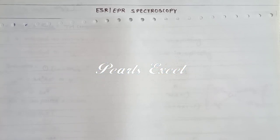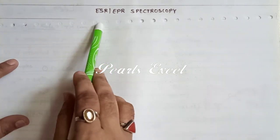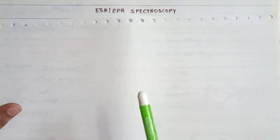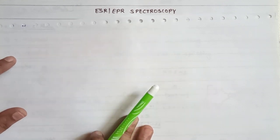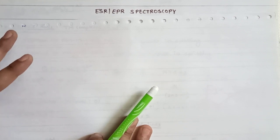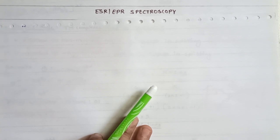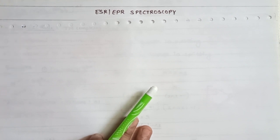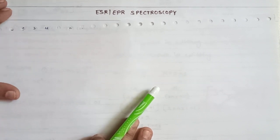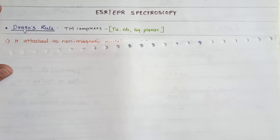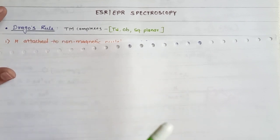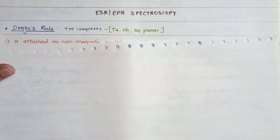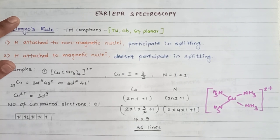Hi, hello friends, welcome to Pulse Excel. Today in this session we are going to discuss ESR and EPR spectroscopy - electron spin resonance or electron paramagnetic resonance spectroscopy. In the last video we already discussed the basic theory of ESR spectroscopy, instrumentation, applications, and hyperfine splitting. Two rules were left from the last session, and those rules I am going to cover in this session.